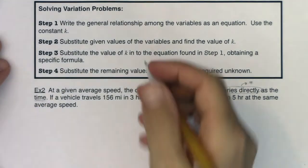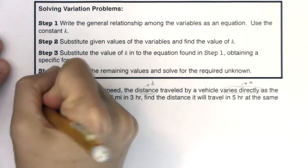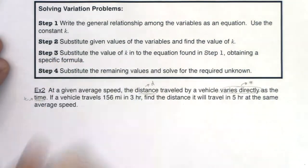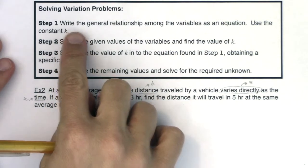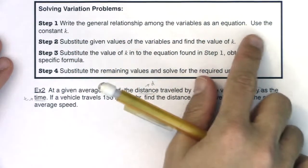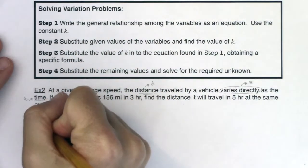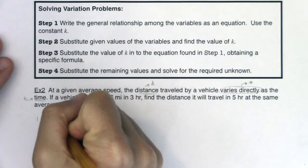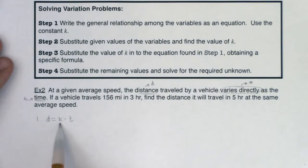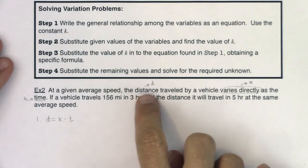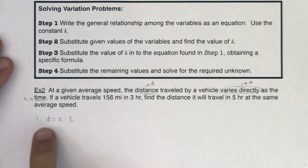So let's try this. I'm going to use D for distance. I want to get away from X and Y. I'm going to use T for time. So for step one, if I wanted to write the general relationship among the variables as an equation, in step one I would say D varies directly as T, or the distance varies directly, so I have a constant proportionality as the time. So this sentence here, 'the distance traveled by the vehicle varies directly as the time,' plays out into that equation.